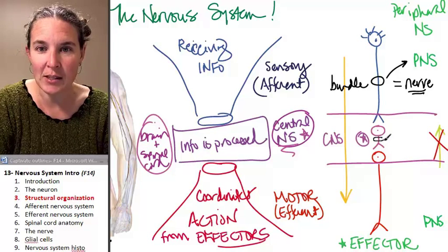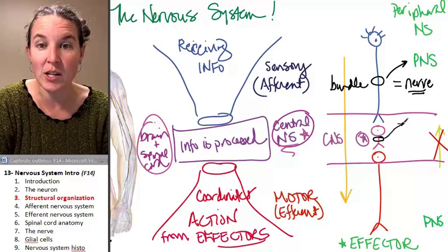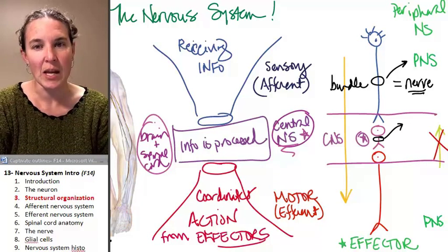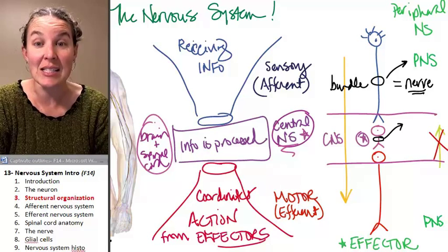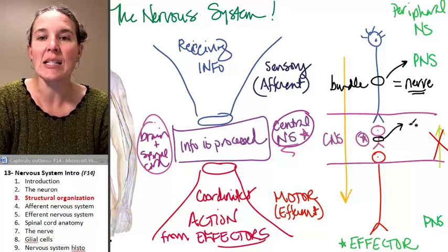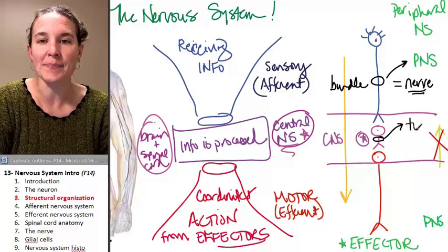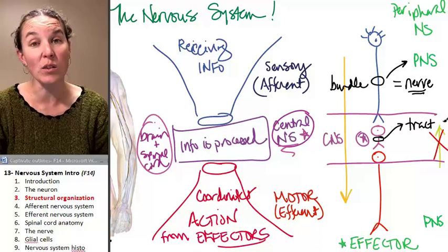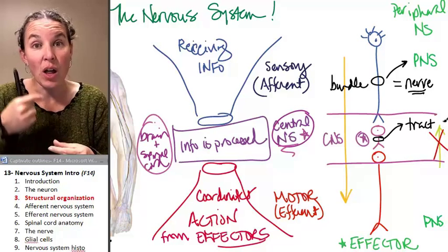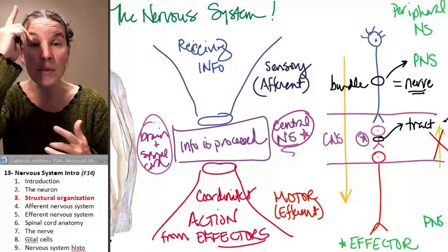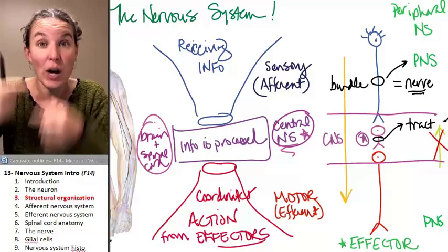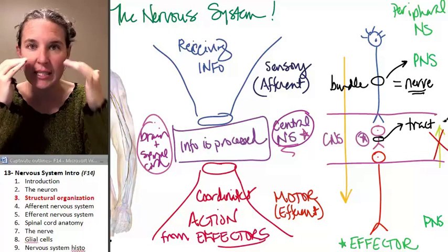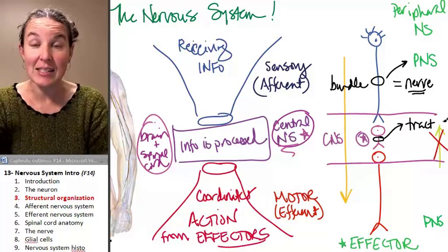Sometimes anatomy is awesome, sometimes not so much. It's the same thing in the central nervous system: a bundle of axons in the central nervous system is called a tract. It's exactly the same thing, but it's called a tract. We can have a bundle of axons traveling up the spinal cord — that's a tract — or a bundle of axons traveling to different places in the brain, and that's also considered a tract.